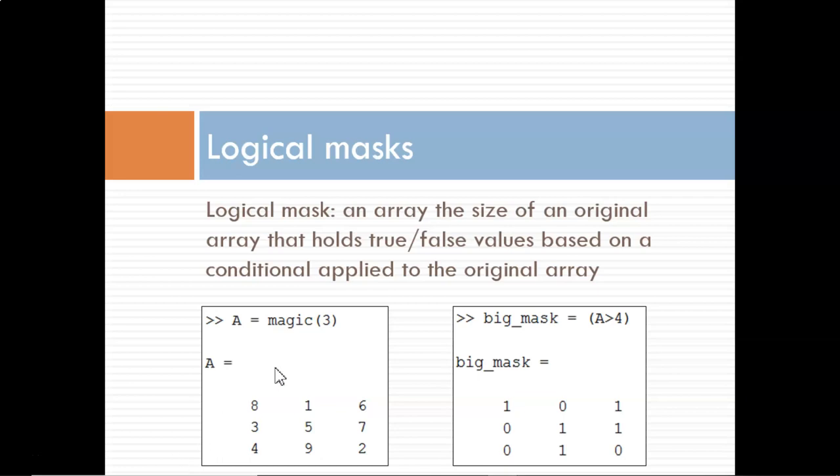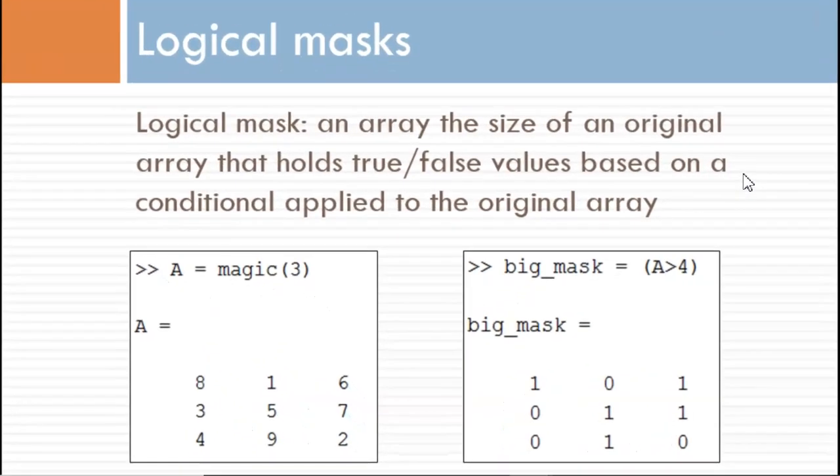A logical mask is an array the size of an original array that holds true or false values based on a conditional applied to the original array. In this example,